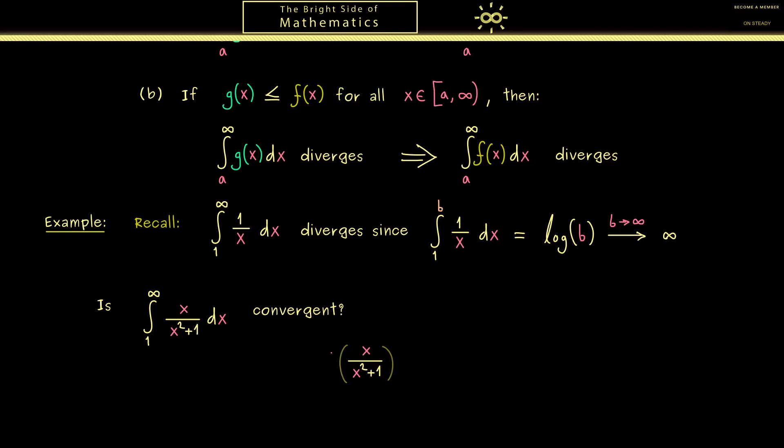Or to formulate it more precisely, we could say that if we multiply the function with x, then we would be able to cancel the x squared. Or in other words, we have 1 plus 1 over x squared in the denominator. Therefore, if we send x to infinity, this whole thing goes to 1. In summary, this function here in the limit looks like 1 over x.